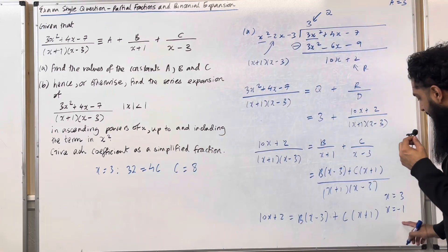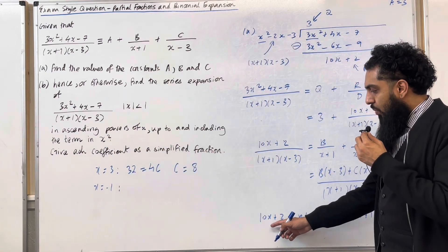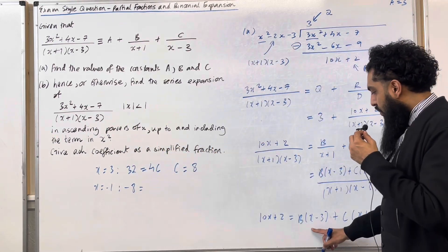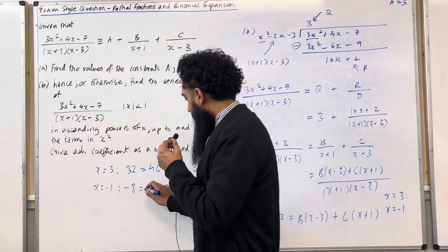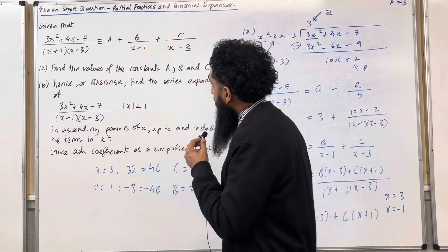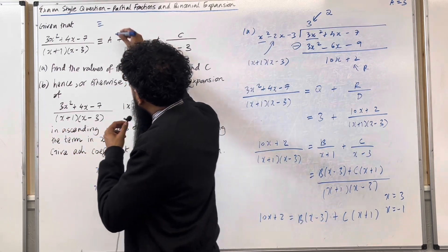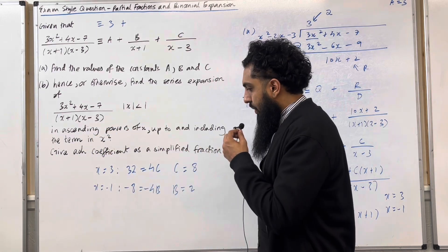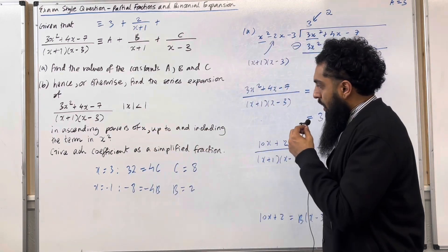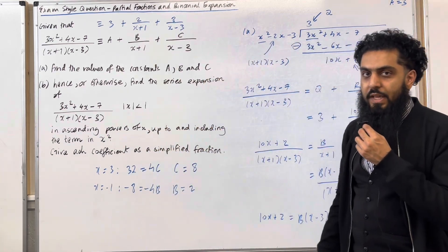Now substituting x equals negative 1: 10 times negative 1 plus 2 is negative 8. We get negative 8 equals B times (negative 1 minus 3), which is negative 4B, and the C term vanishes. Solving for B gives B equals 2. So the original fraction is identical to 3 plus 2 over (x plus 1) plus 8 over (x minus 3). This completes part A.